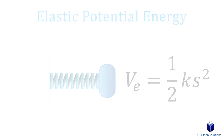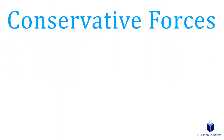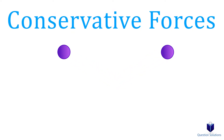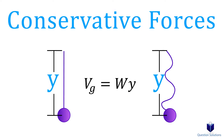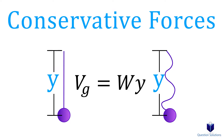Both of these are conservative forces, which means the path that an object takes doesn't matter. For example, imagine two identical objects descending using different paths — at the end it doesn't matter what path they took, because the potential energy is based on the initial and final location. Since the displacement is the same, the gravitational potential energy is also the same regardless of path. I go in depth about conservative forces in the kinematics video about conservation of energy.